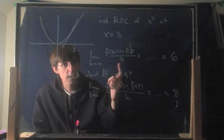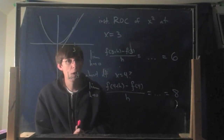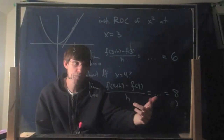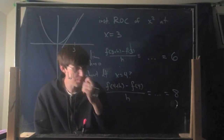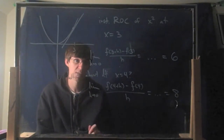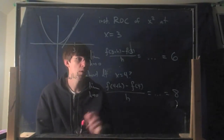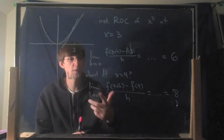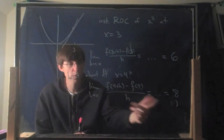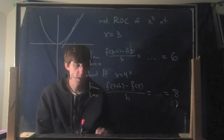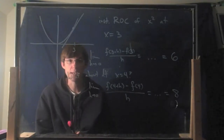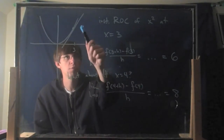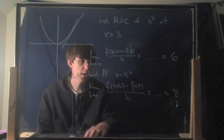What if I asked you to do a different point? Instead of 3, you use 4. You go through the same process; the steps are more or less the same. All the numbers will be different, but you do the same sorts of stuff. It turns out the answer is 8 in that case. So if you use the point 3, you get 6; if you use 4, you get 8.